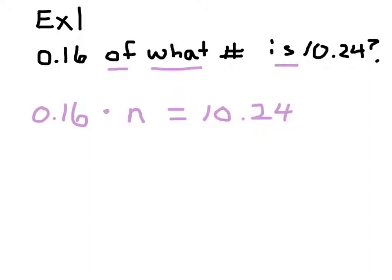Now I've written it as an equation. I'm going to solve the equation by looking at the side the variable's on and asking myself, what are they doing to n? They're multiplying it by 0.16, so I'm going to do the opposite—divide both sides by 0.16. The 0.16s cancel out. You can take your calculator or paper and pencil and divide 10.24 by 0.16. The answer is 64.